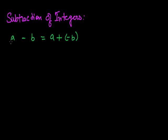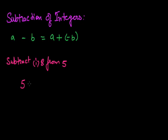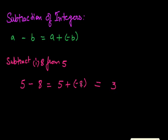Let us understand with the help of an example. I have to subtract 8 from 5. We have to be careful — we have to subtract 8 from 5. So we will write 5 minus 8. Since we have to subtract 8 from 5, it will be equal to 5 plus minus of 8. When we add two integers of different sign, we find the difference. The difference of 8 and 5 is 3. Out of 5 and minus 8, 8 is the greater number and has the minus sign. So the answer will be minus 3.